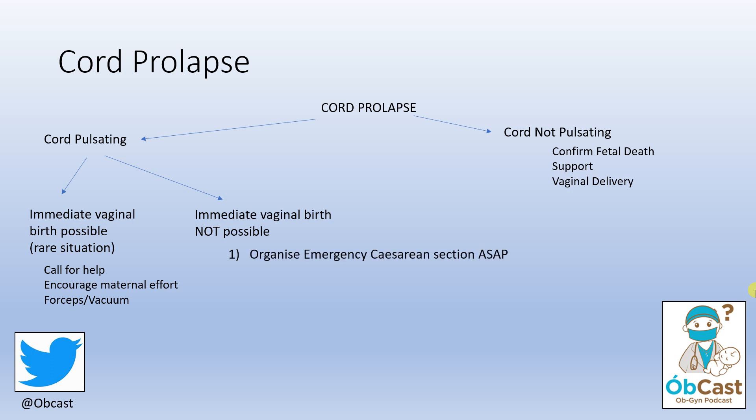The goals here will be: firstly, to organise an emergency caesarean section ASAP — so this is picking up the phone, calling for help with specific instructions. Two, continuous fetal monitoring. Three, elevate the presenting part off the cord. What this involves, usually, is a gloved hand with two fingers inside the vagina, pushing up on the head to relieve any pressure that it's placing on the cord. The person who does this usually travels with the patient to the operating theatre, and their hand is only removed once the surgeon's hand is underneath the baby's head and ready to deliver them.